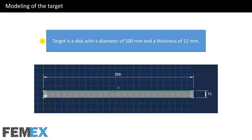Now I want to talk about modeling of the target. The target is a disk with a diameter of 500 mm and a thickness of 12 mm. This is the sketch of the disk. As you can see, its radius is 250 mm and its thickness is 12 mm.